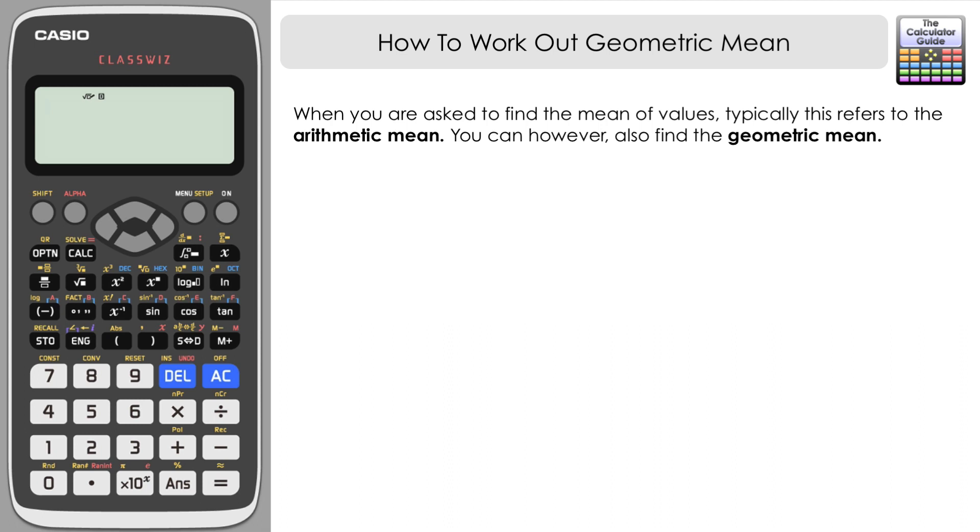There is another type of mean that we could work out, which is the geometric mean. Let's just take a look at the formula to work out the geometric mean. It's presented in two ways here. We're going to have a look at the right hand one first and see what that tells us to do.